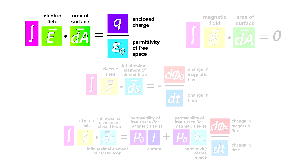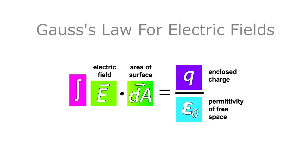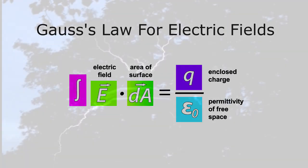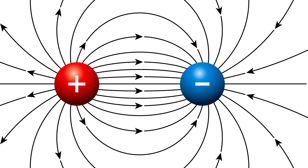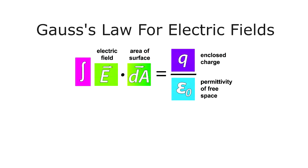Now let's go through each one very briefly. We'll stick with the integral forms for simplicity. Number one, Gauss's law for electric fields. First recall that an electric charge creates an electric field, which then exerts an electric force on other electrically charged particles.